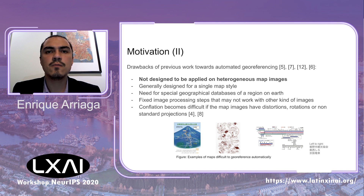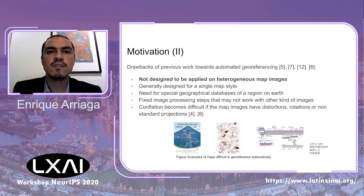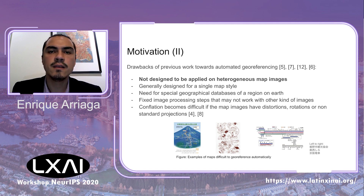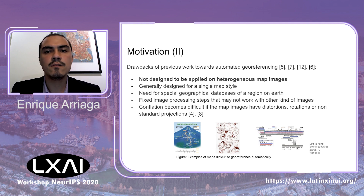In the last few decades, there have been several advances towards the automatic geo-referencing of map images or even photographs. However, these methods are usually focused on a single map style, a single map projection, or a single geographical area. Also, sometimes they do require access to additional databases that may be difficult to obtain.